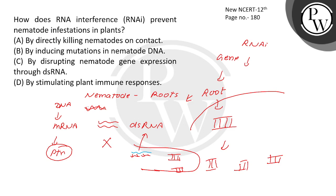How does RNA interference prevent nematode infestation in plants? Option A: by directly killing the RNA on contact — incorrect. Option B: by inducing mutation in nematode DNA — incorrect. Option C: by disrupting nematode gene expression through double-stranded RNA — it will not express, this is correct. Option D: by stimulating plant immune responses — incorrect. The correct option is C. This information is from NCERT class, page number 180. Thank you.